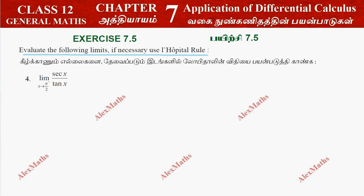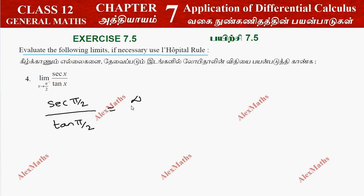So first, we need to take the limit as x approaches π/2 from the left. Substituting π/2, we get secant(π/2) divided by tan(π/2). Secant(π/2) is infinity, and tan(π/2) is infinity.